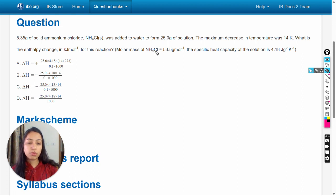So here molar mass of ammonium chloride is given and specific heat capacity of the solution is given. And firstly, in this question we have to understand that this maximum decrease in temperature is given but here it is not mentioned about the solution and the dissolution here in the question.